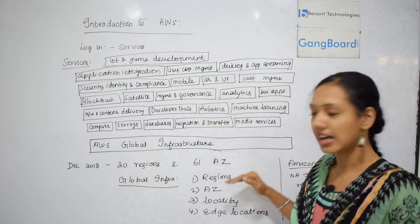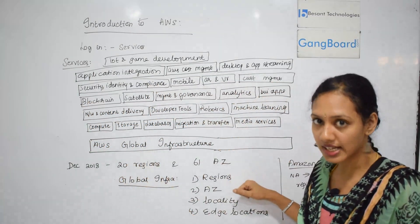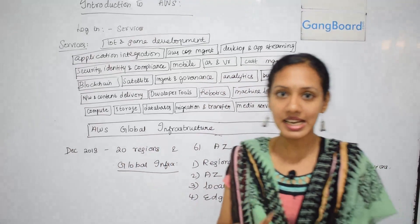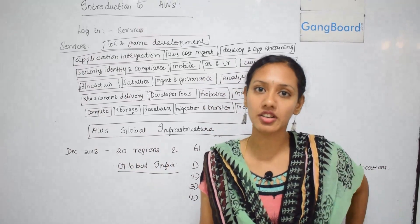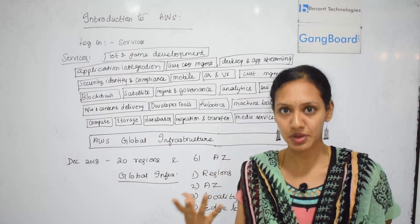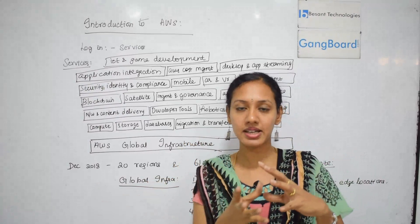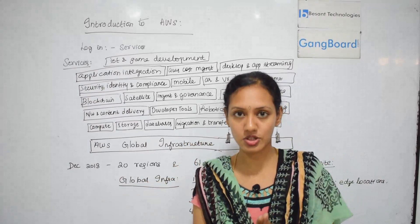What is a region? Region is nothing but a geographical area where AWS is based. It has an independent collection of AWS resources within a defined geography. That is called a region.